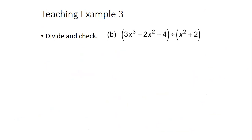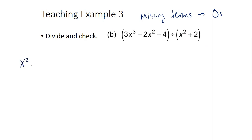Now we're going to talk about what if you're missing variables. When you're missing terms, you're going to fill in with zeros. For example, here we have X squared plus two. With long division, all terms need to be present from your highest down to your lowest. I'm missing my X term, so when I write this it's going to be X squared plus 0X plus two.